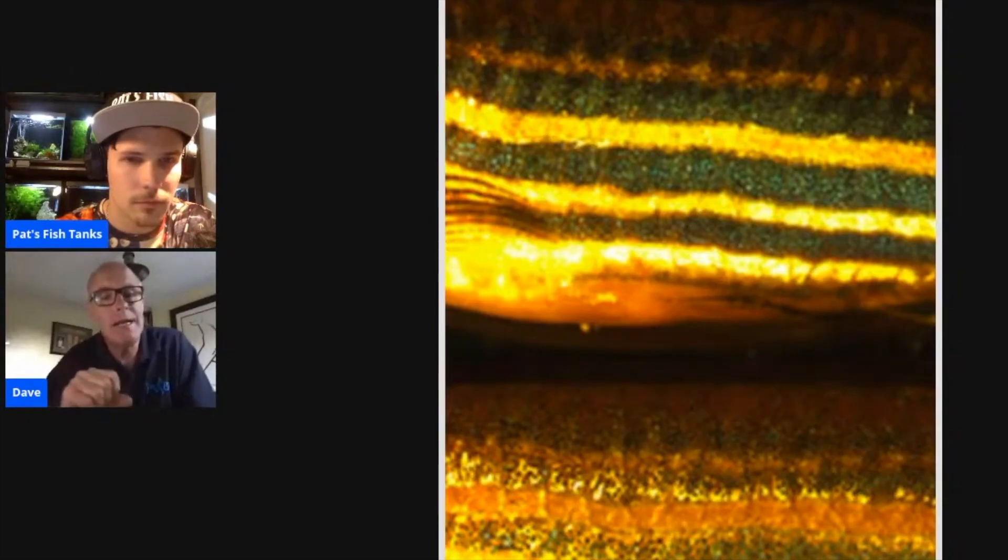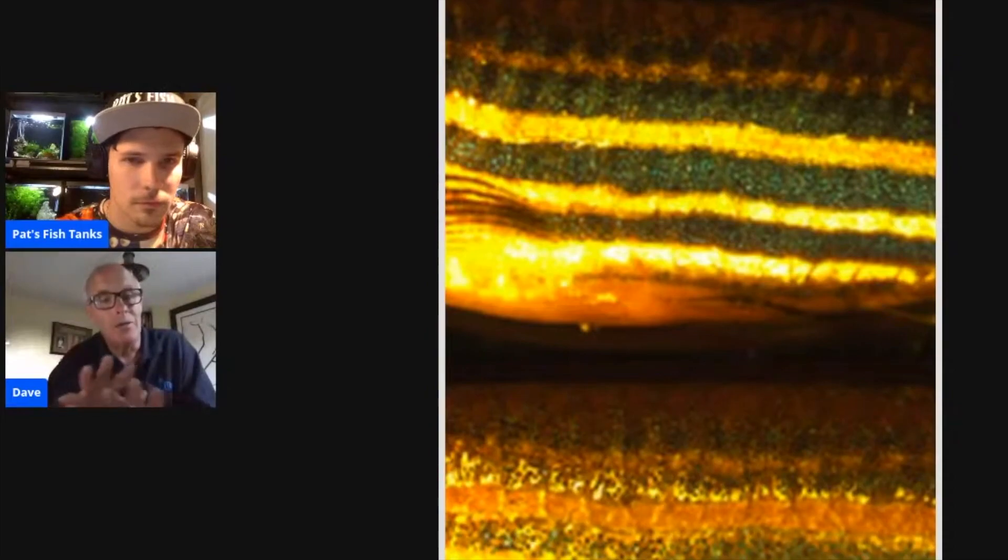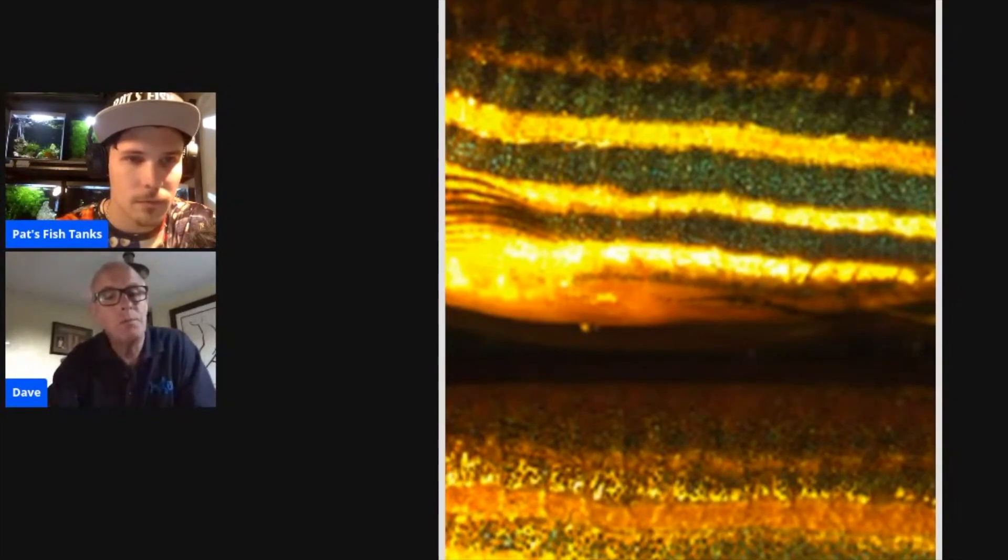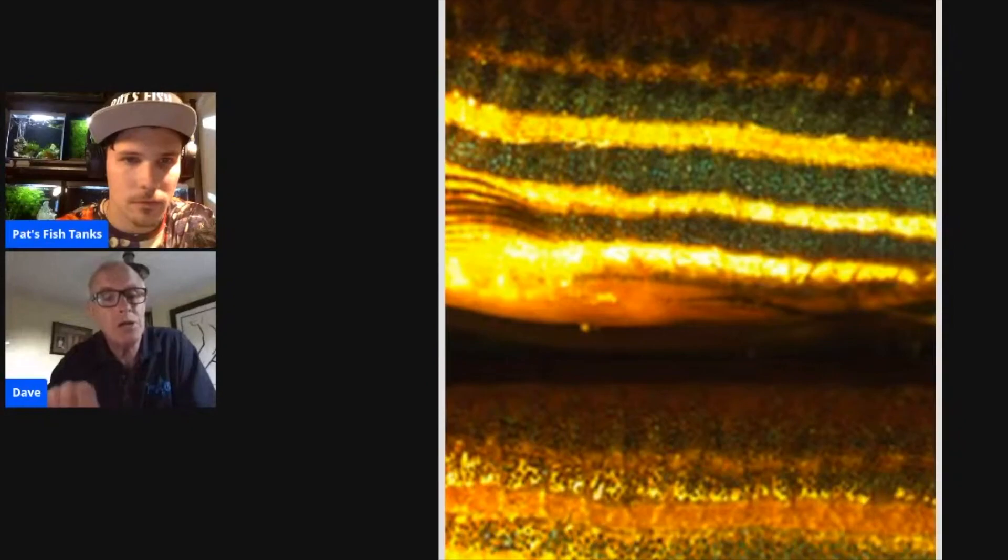And you can actually see how the pigment cells in the black line are all expanded and several layers of them. So you've got that thick, dark black line. On the bottom image, you can see the actual black dots. And that's where the pigment is all contracted into the center of the color cell, the chromatophore.